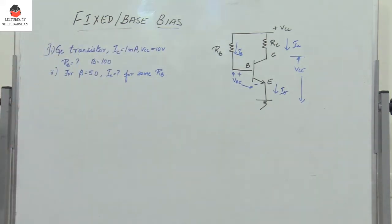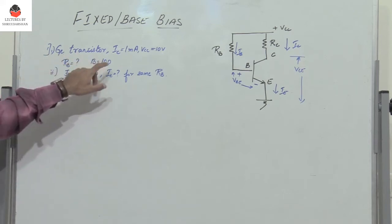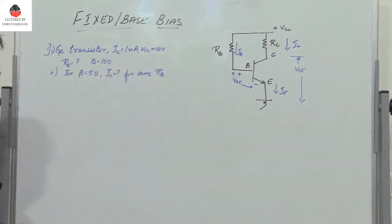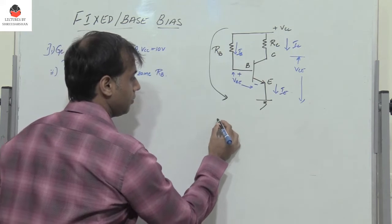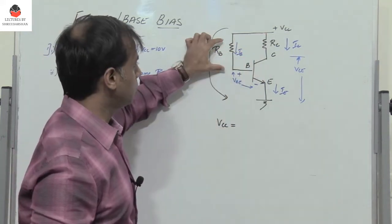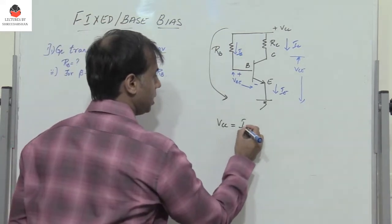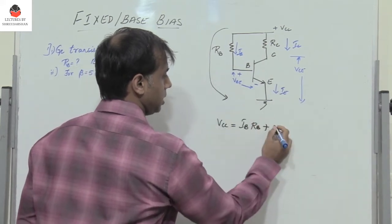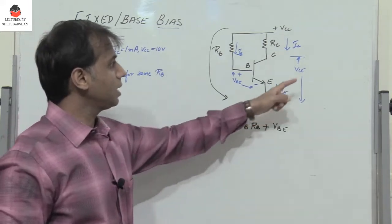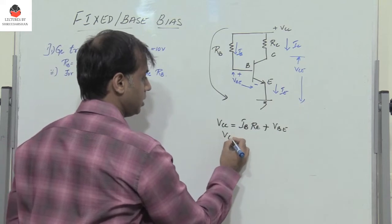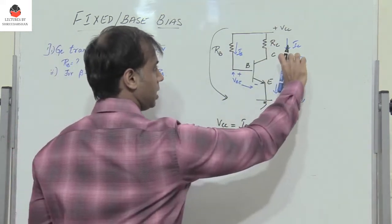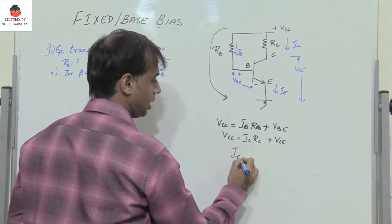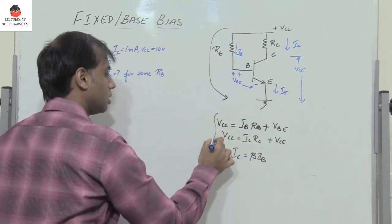Let's move on with the first problem. A germanium transistor is given. The collector current IC is 1 milliampere, VCC is 10 volts, and we need to find RB if beta equals 100. Writing the KVL equations: along the base loop, VCC equals IB times RB plus VBE. Along the collector loop, VCC equals IC times RC plus VCE. And we know that IC equals beta times IB.